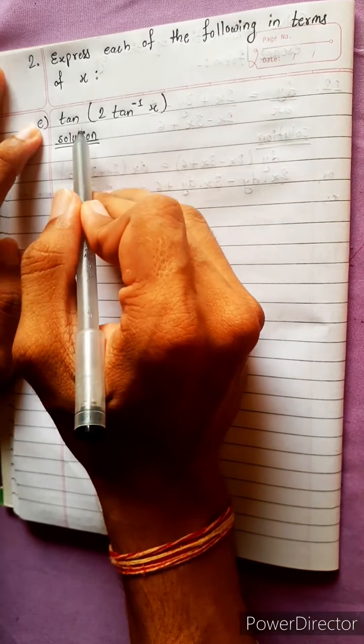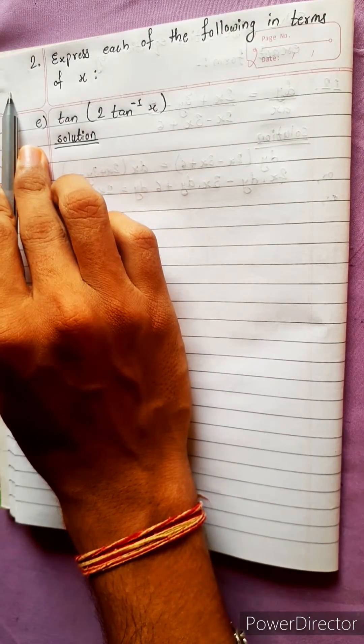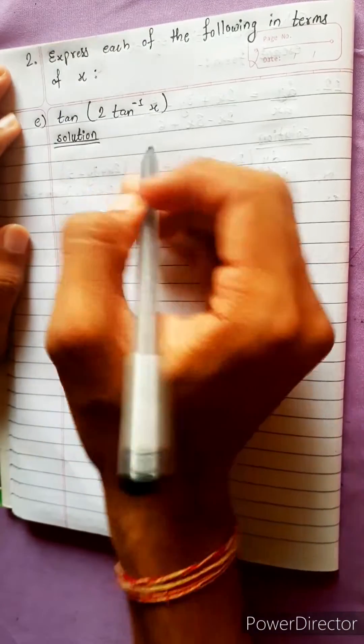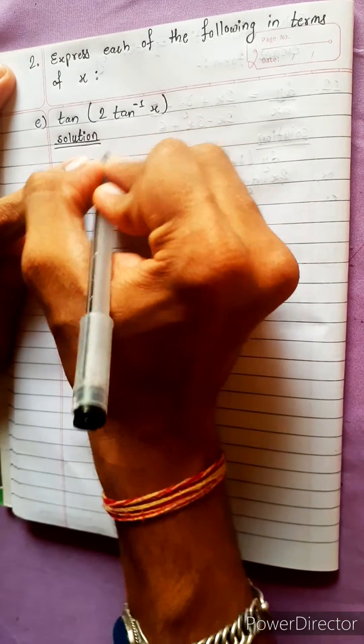Express each of the following in terms of x. The question is tan of 2 tan inverse x. Okay, there is one formula. Before starting this, we write the formula here.